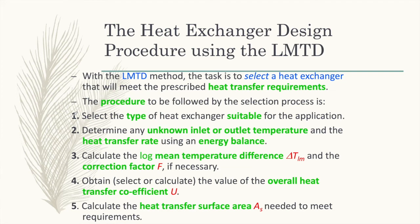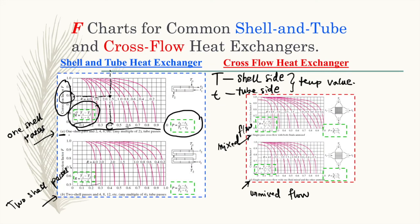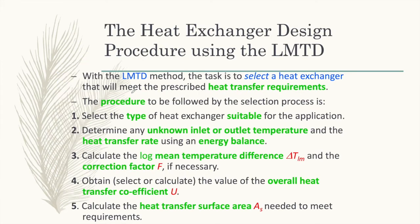The heat exchanger design procedure using the LMTD method begins with: first, select the type of heat exchanger suitable for the application. Second, determine any unknown inlet or outlet temperatures and the heat transfer rate using energy balance. To use the LMTD method, all inlet and outlet temperatures for both shell and tube sides must be known; if any are missing, use energy balance equations to find them.